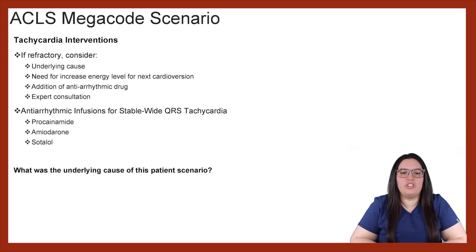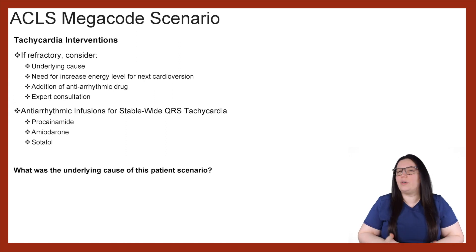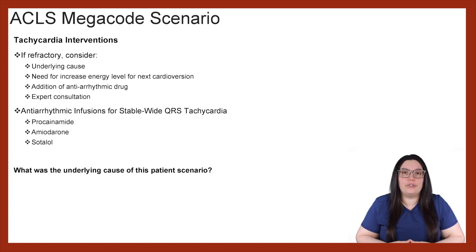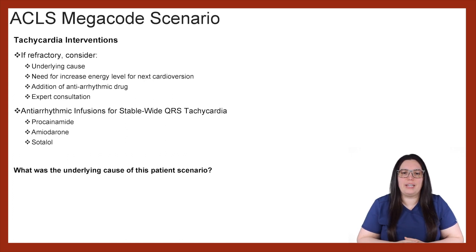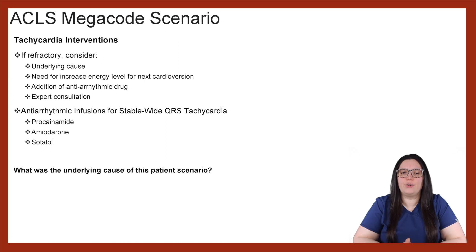After those interventions, if the rhythm is refractory — meaning it comes back — we may consider investigating the underlying cause. We may also want to look at cardioversion for these patients, as well as additional antiarrhythmic medications. We always want to make sure we're consulting our experts when it comes to treatment. If we need to start antiarrhythmic infusions for stable wide QRS tachycardias, we have options for those as well.